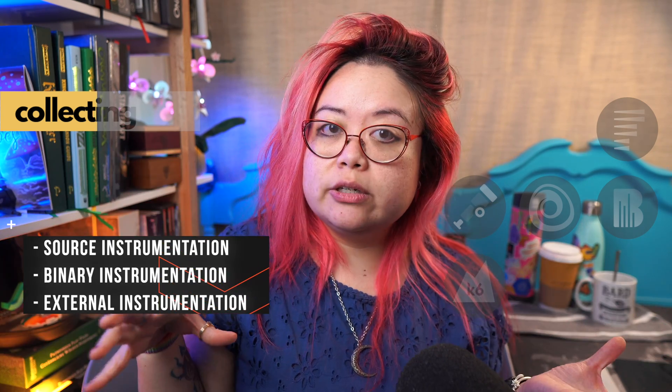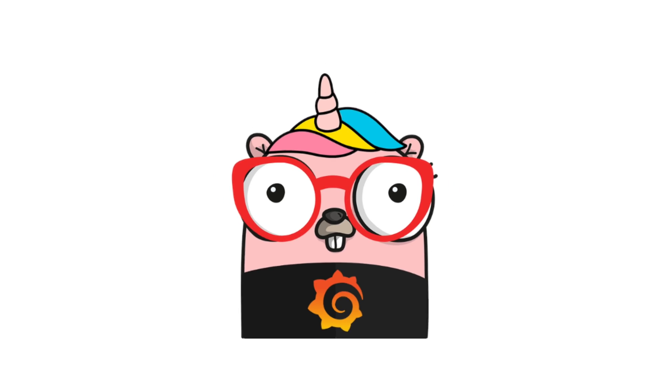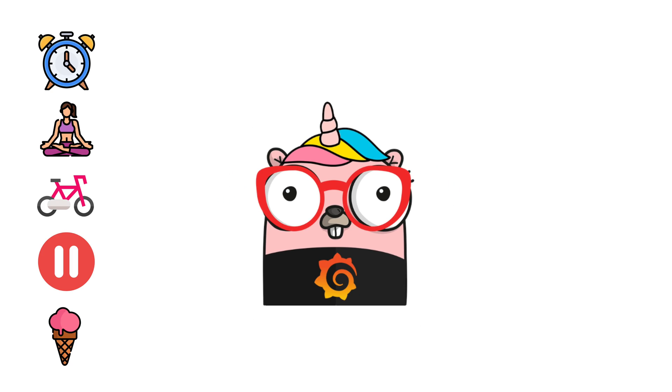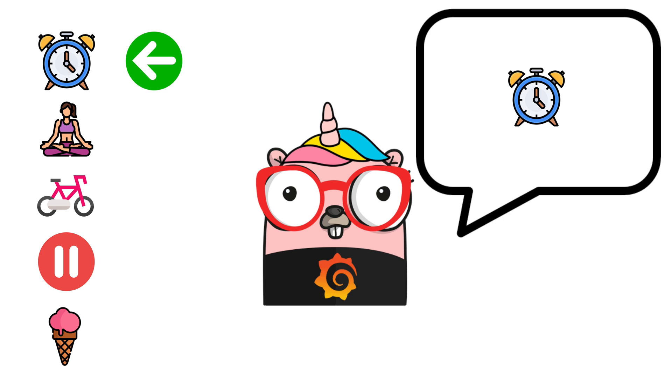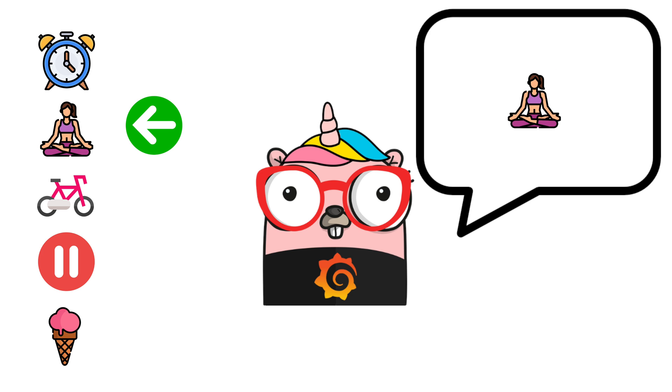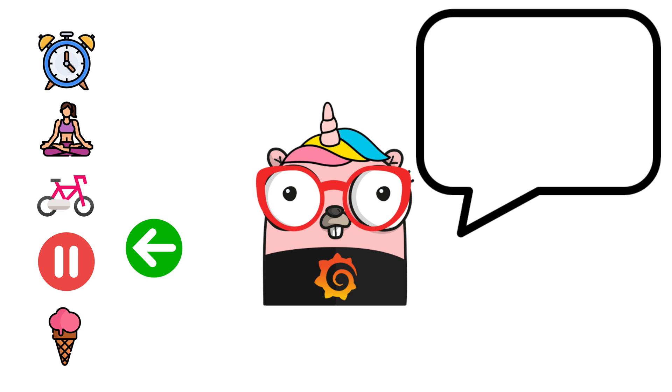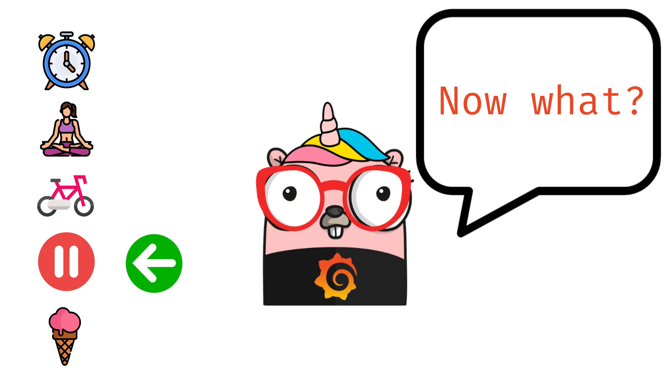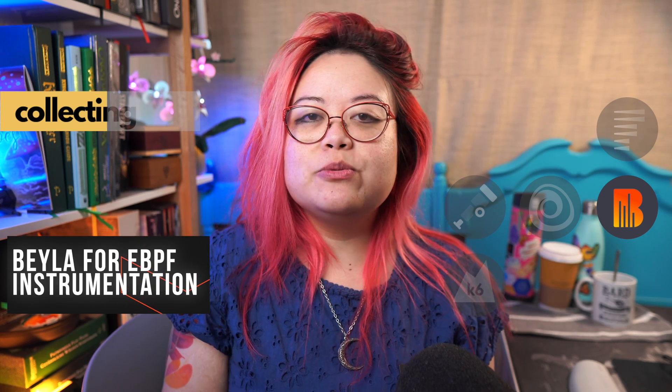Some approaches to instrumentation don't modify either the code or the binary itself, and we can loosely lump these into external instrumentation. For example, in a language like Go, you can attach to the binary without modifying or instrumenting it, and just listen for signals at breakpoints or established safe periods within the program. Grafana Beyla is a new eBPF auto-instrumentation tool, and it employs a mix of approaches depending on the programming language and the protocol.